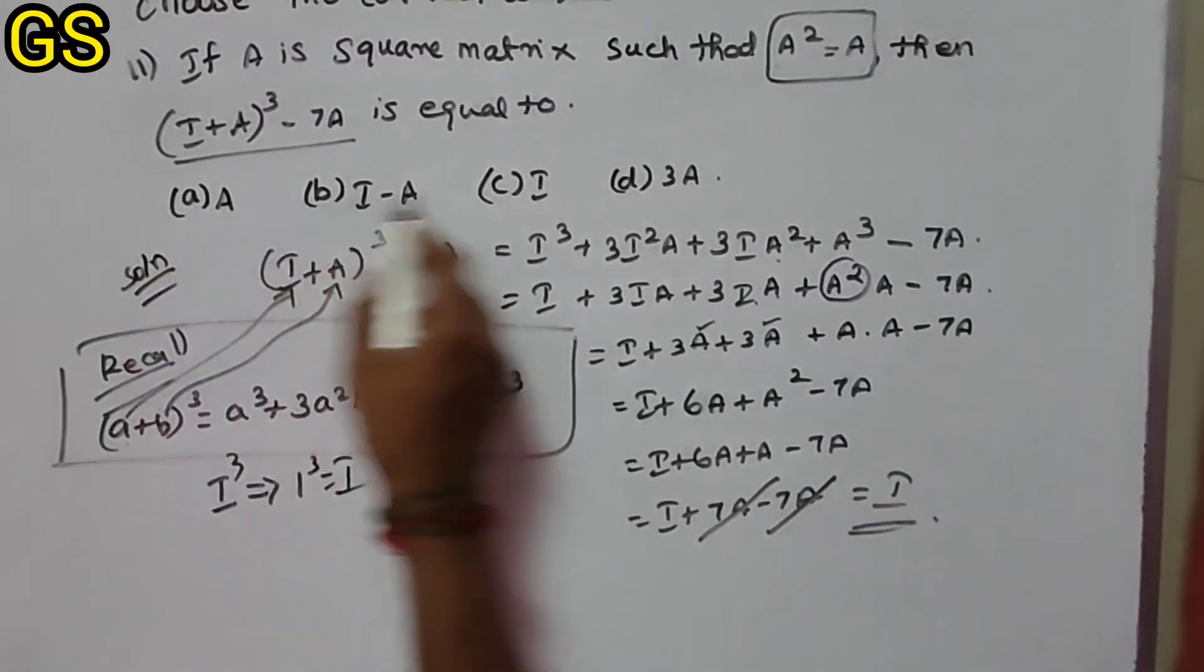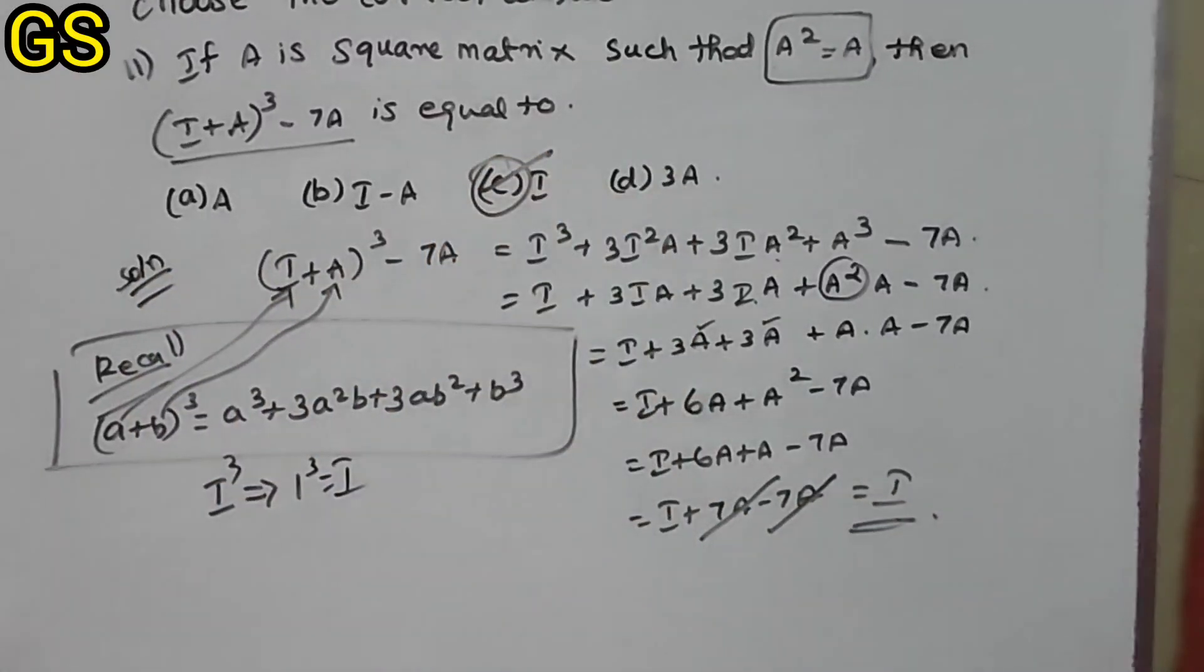The answer is I, the identity matrix, which is option C. Okay, that's it for this question. Thank you.